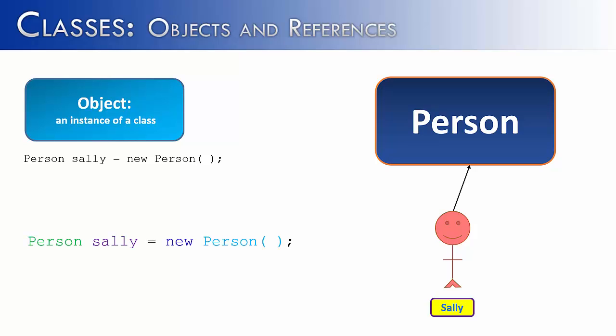I've color-coded each element of the construction of a person. First, we have person, which we've already identified as the name of the class. Next, we have the object name, which I've given as Sally. We have the keyword new, which is creating memory for the object. And lastly, we have the constructor. And you'll notice that the constructor is the same name as the class. You'll always see the name of the class twice, at the beginning and at the end with the constructor. You can tell the difference between the constructor and the name of the class in that the constructor will always have parentheses at the end, because it is a method.